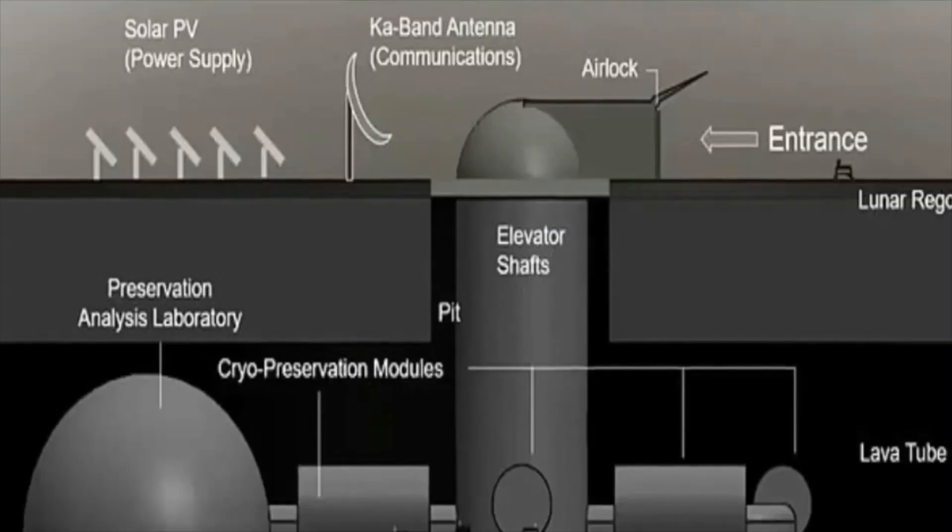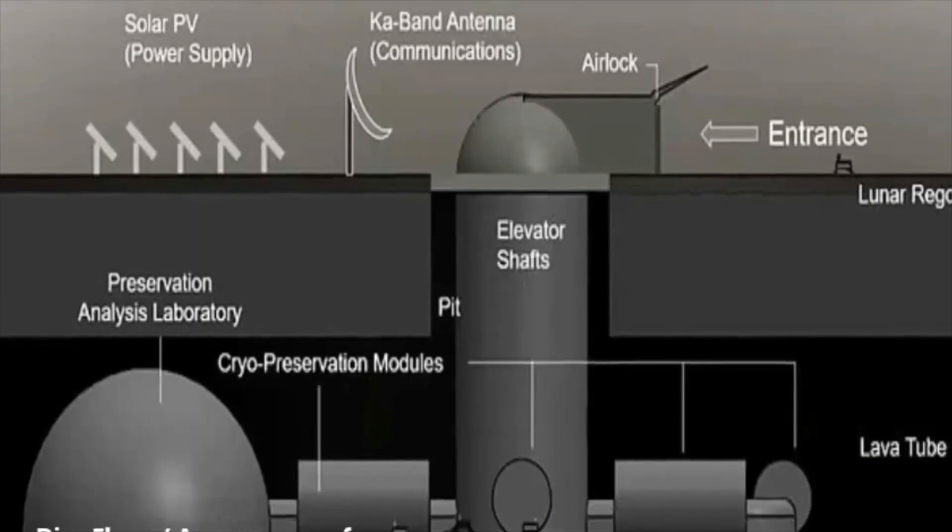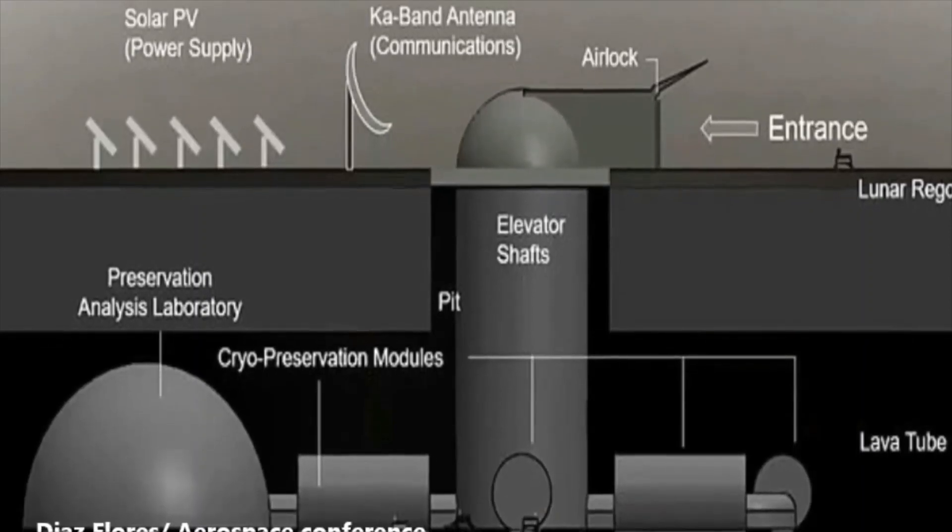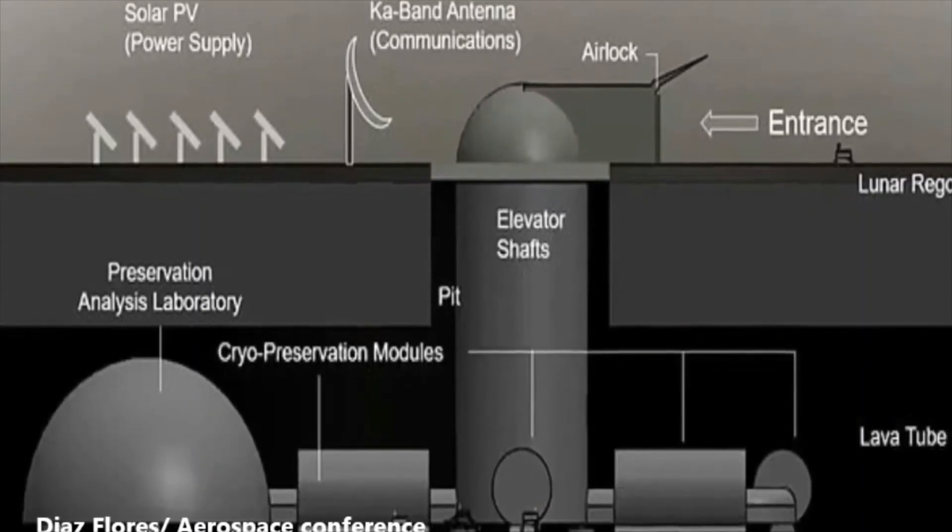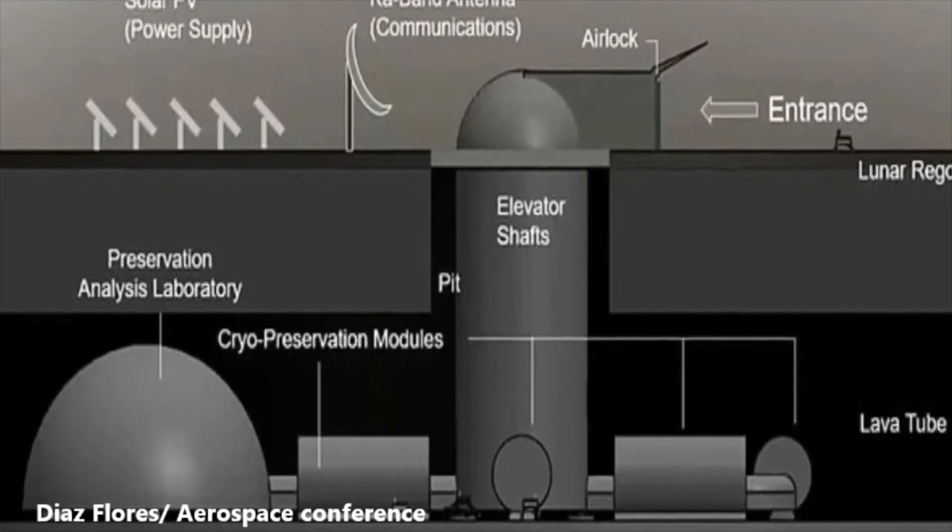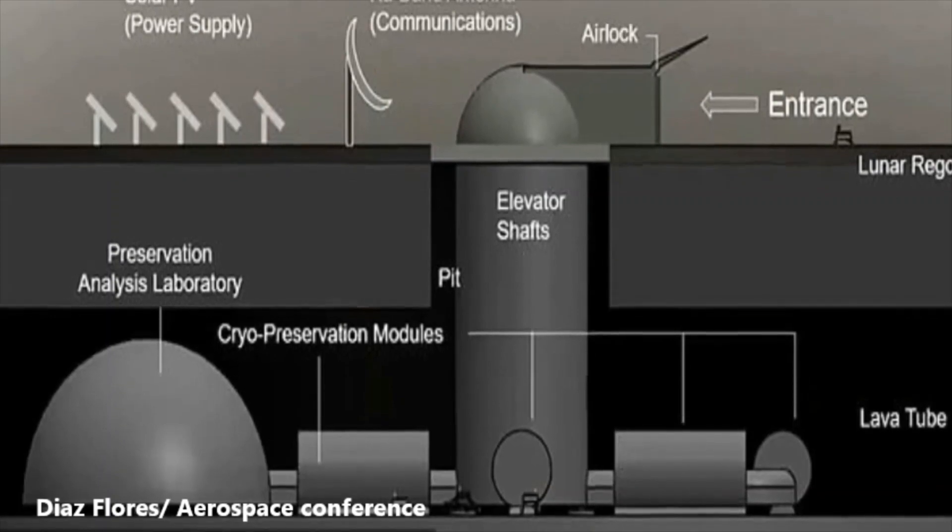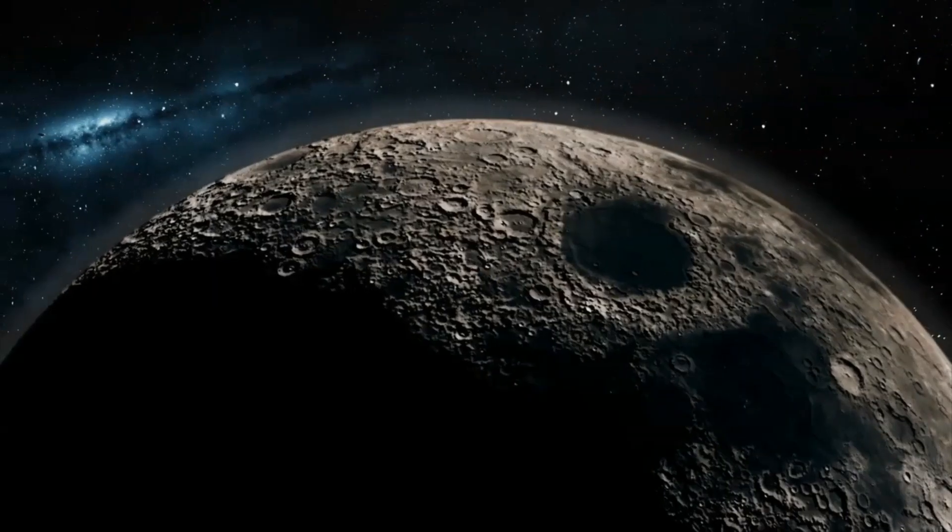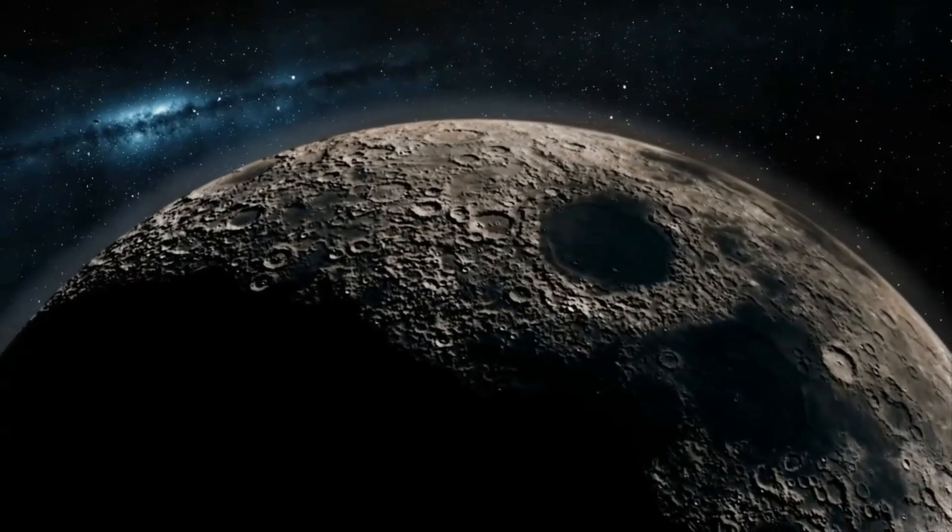Scientists have proposed the lunar gene bank, which could also house seed and spore samples. It is envisaged as being built under the lunar surface in a hollow, cooled lava tube. Specimens deposited in the ark would be kept refrigerated at cryogenic temperatures.